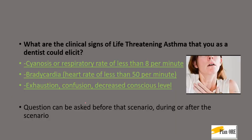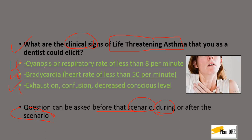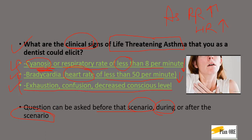There is a chance the examiner asks you about the clinical signs of life-threatening asthma. This question can be asked before, during, or after the scenario. The three features to remember are: cyanosis; respiratory rate less than 8 per minute; and heart rate less than 50 per minute. If you remember that in an acute asthmatic attack the respiratory rate and heart rate go up, in life-threatening asthma it is completely opposite. Additionally, because the heart rate and respiratory rate are low, the patient will be exhausted, confused, and the level of consciousness will decrease.